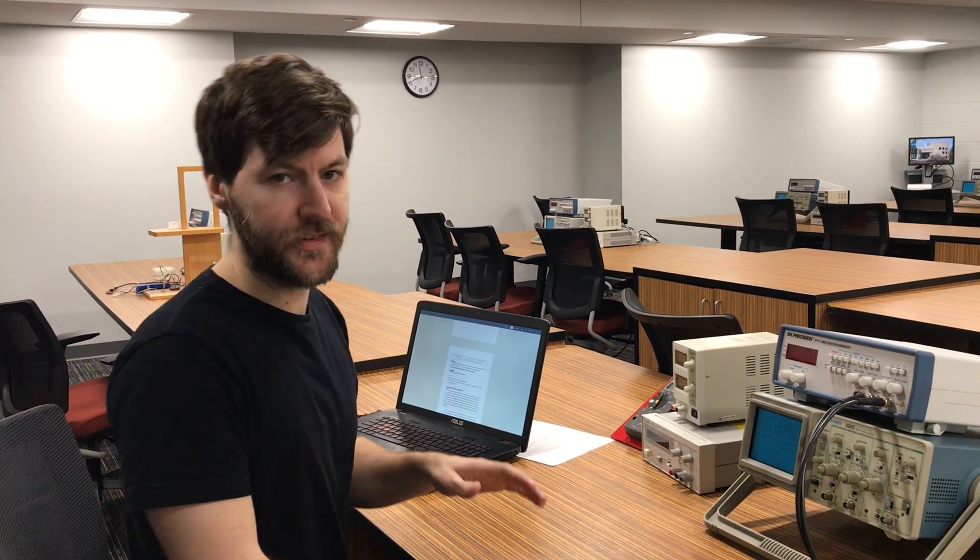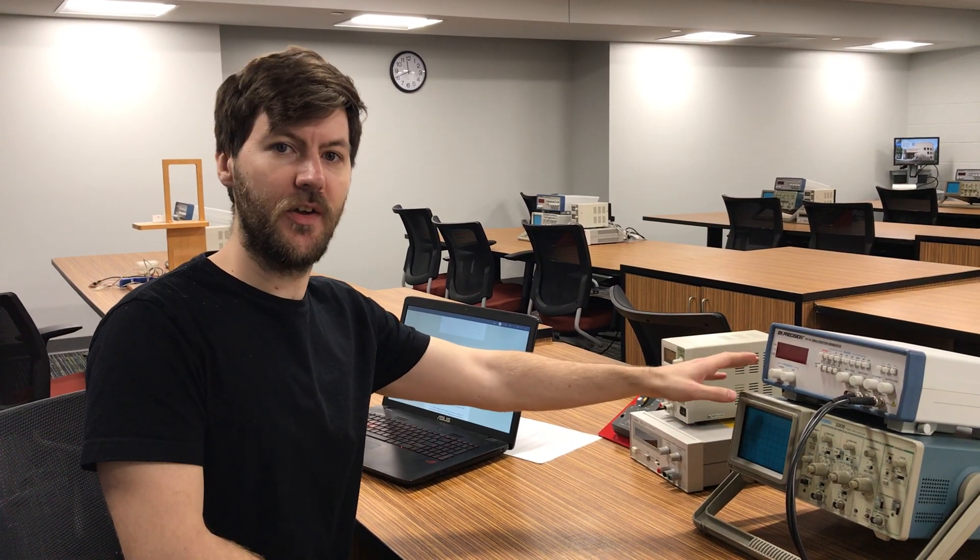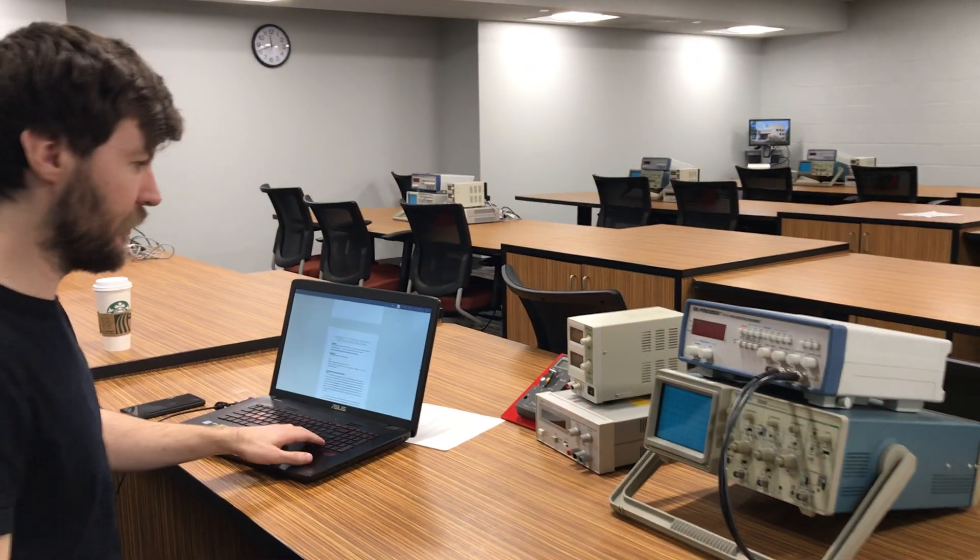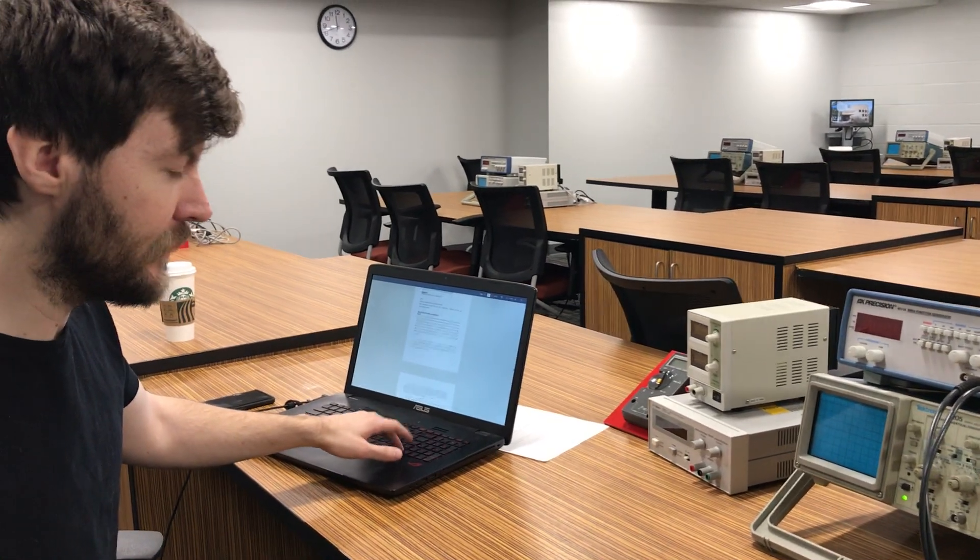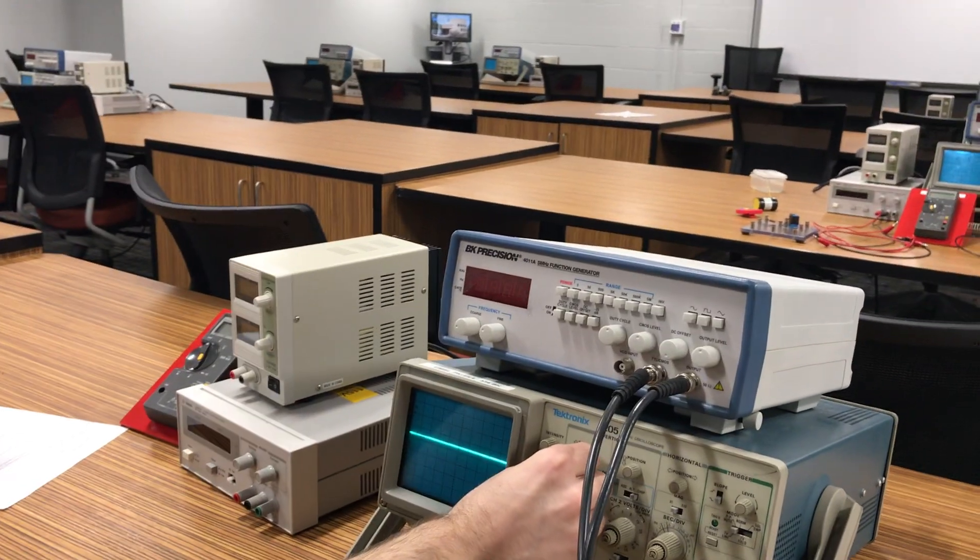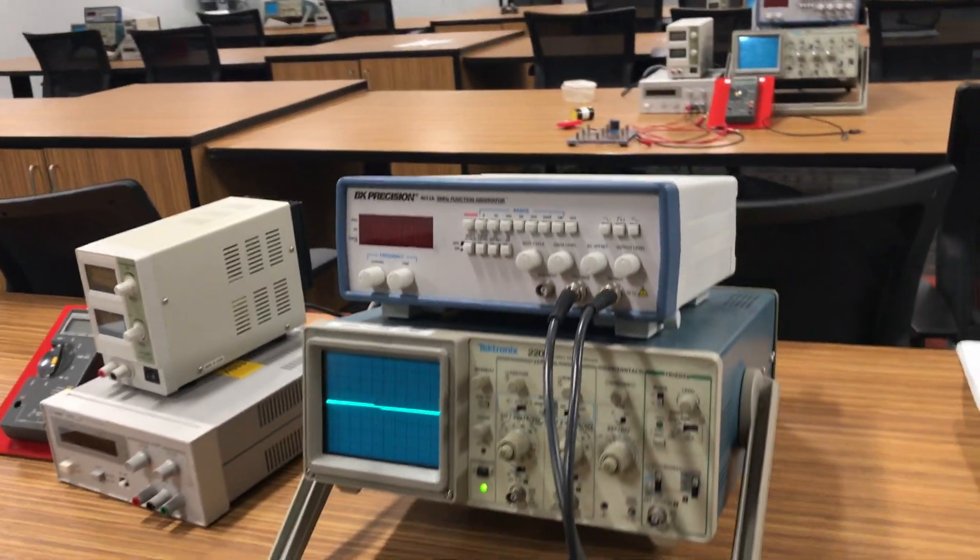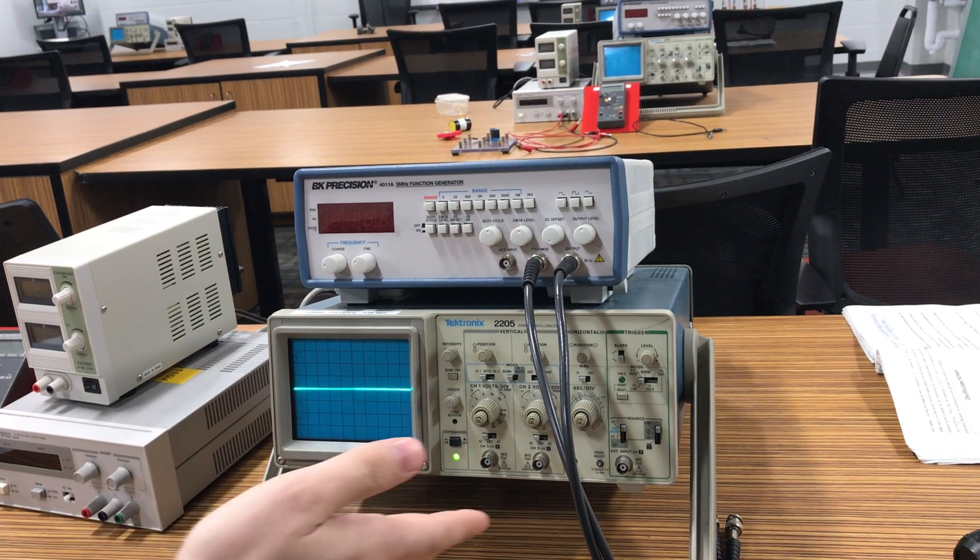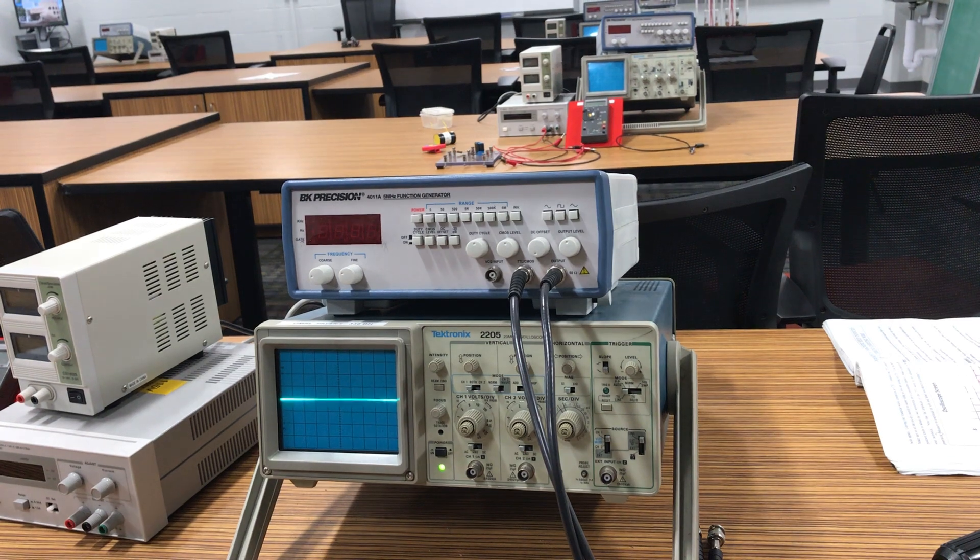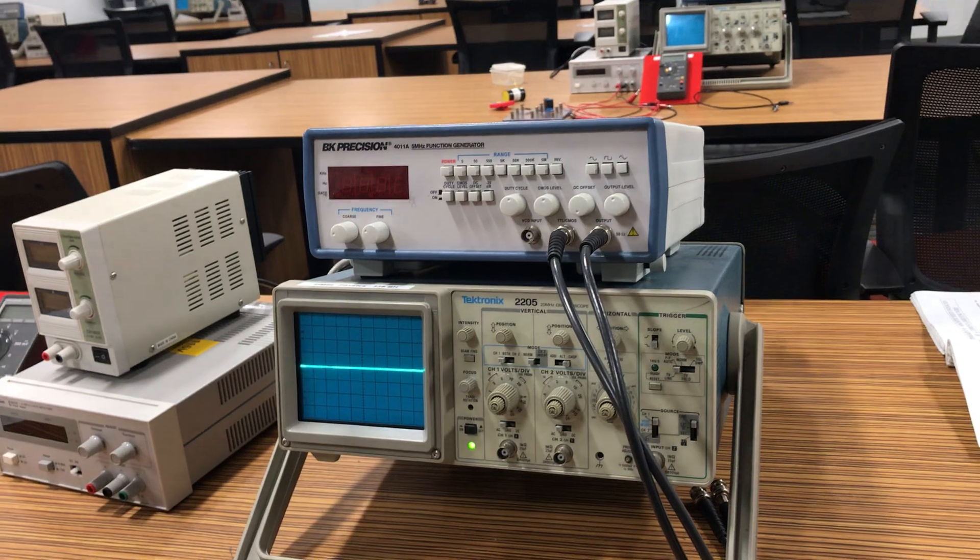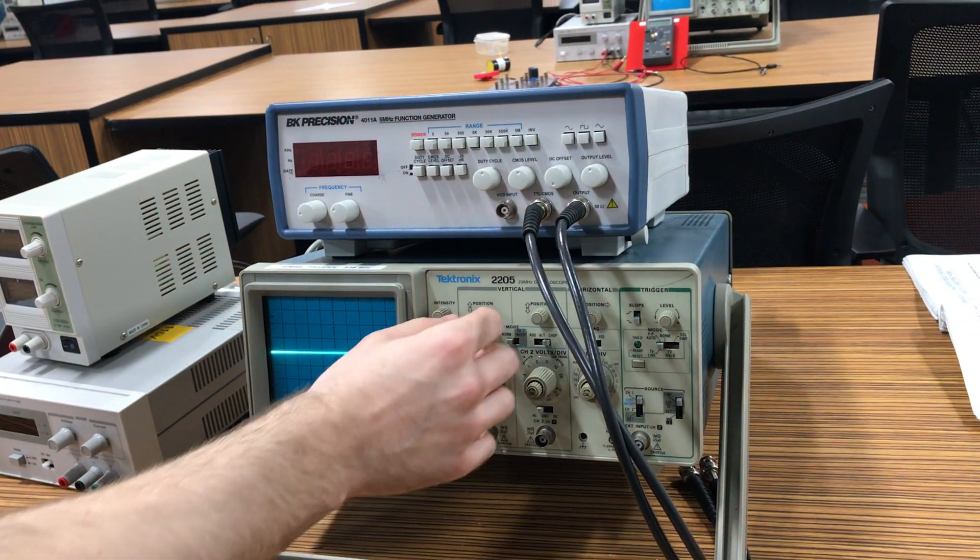So what we're really going to start with is this piece of equipment. This is called an oscilloscope and this is what we actually use to take our measurements. We'll go ahead and power this oscilloscope on and the first thing you'll notice is we can see this line going straight across the screen. That's just reading no voltage going through our system right now.